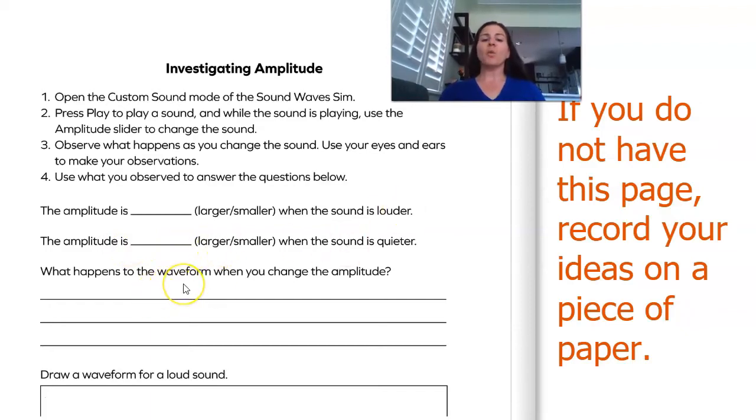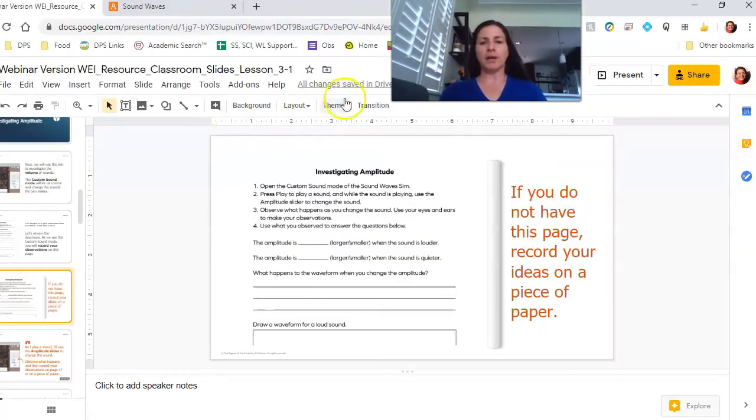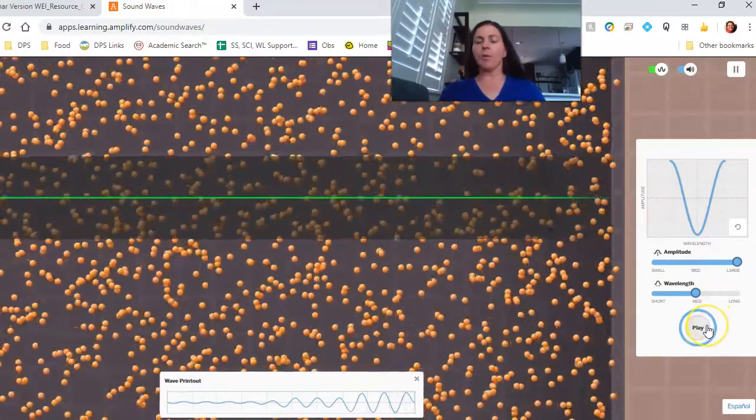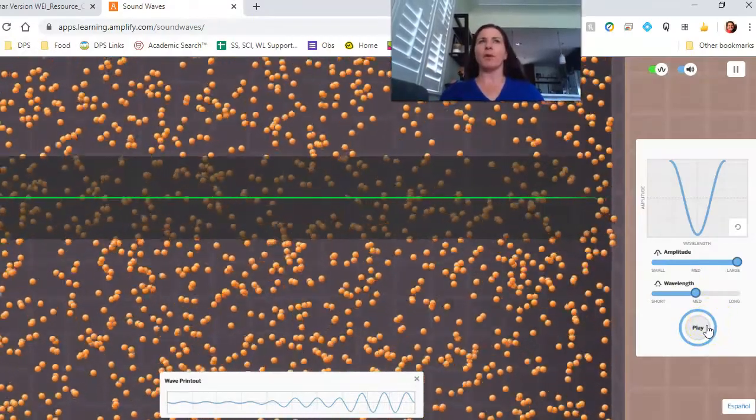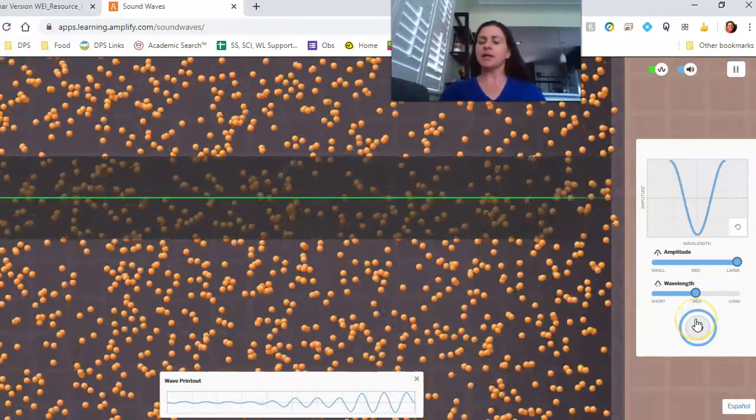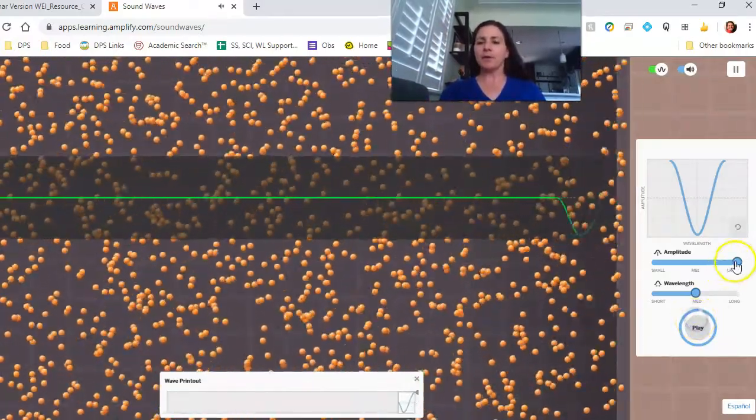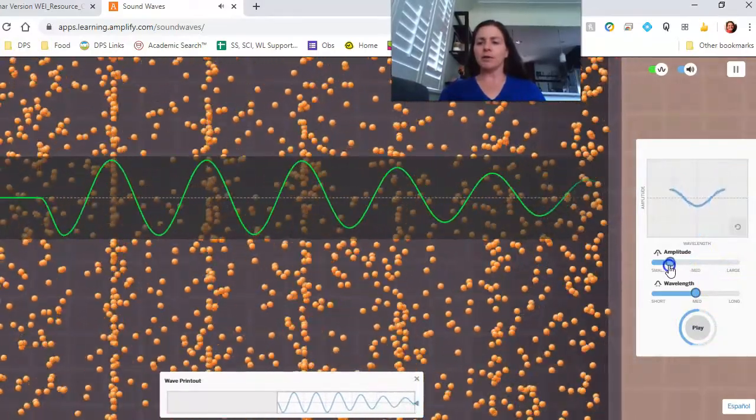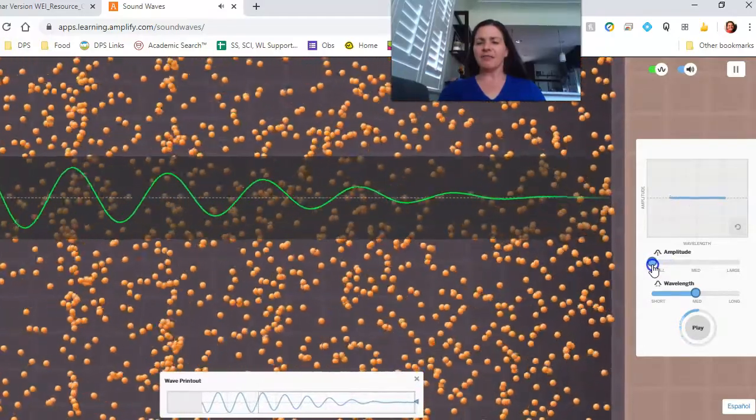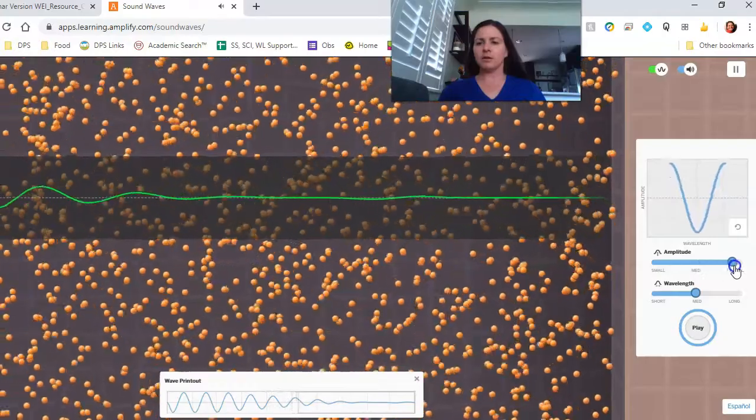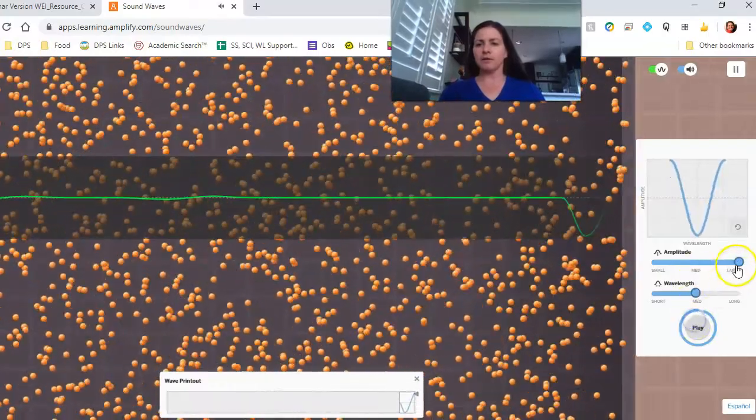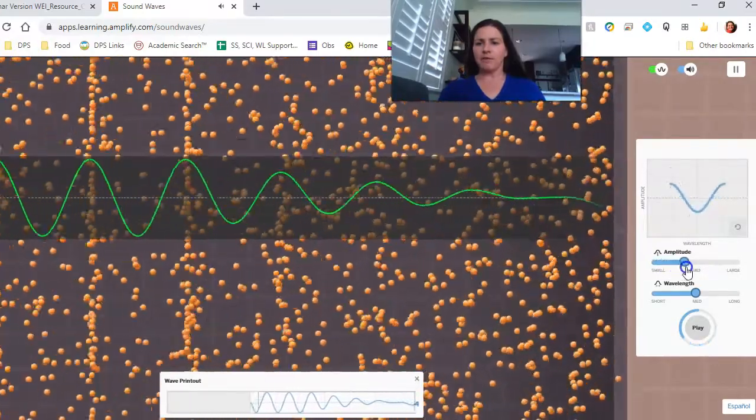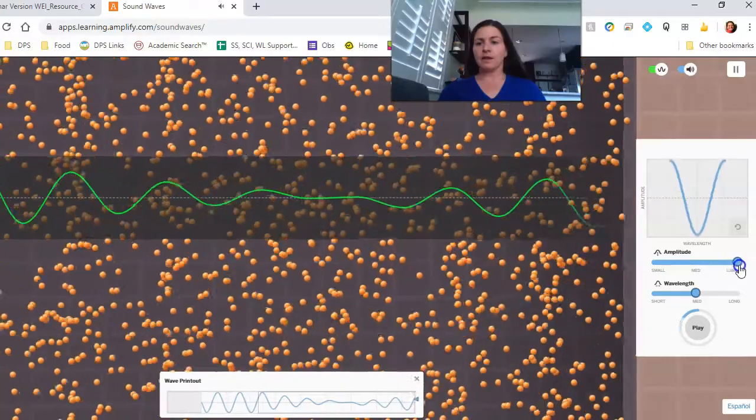What happens to the waveform when you change the amplitude? Well, it's going to go back one more time. So what happens to the waveform, I guess that means it's the squiggly line that we're seeing. So I'm going to press play, making the amplitude smaller. Oh, look at that. The wave is getting flatter. And if it's bigger. And if it's bigger, that wave gets bigger. It's a smaller wave. And bigger wave.